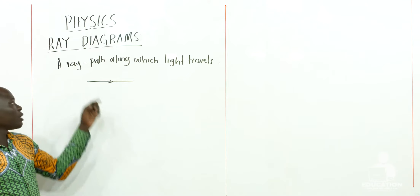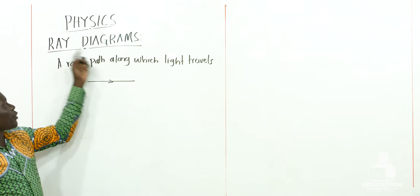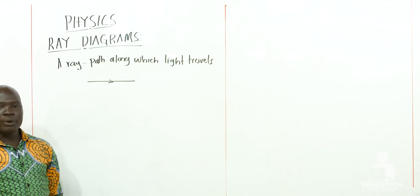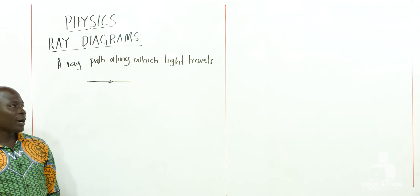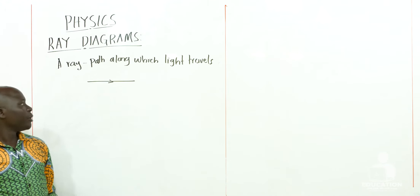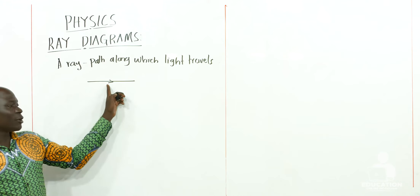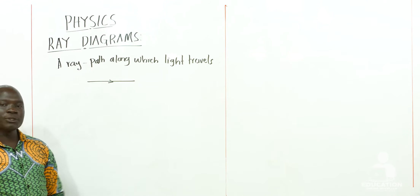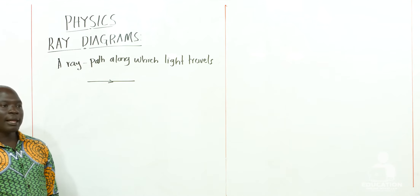When we talk about Ray Diagrams, we mean an illustration of how we can locate the position of the image formed when an object is placed at various positions in front of a lens.